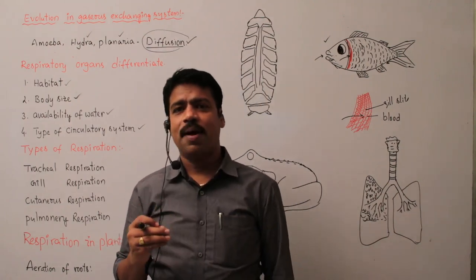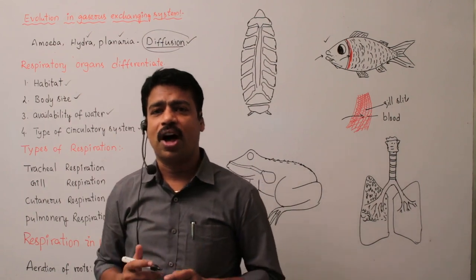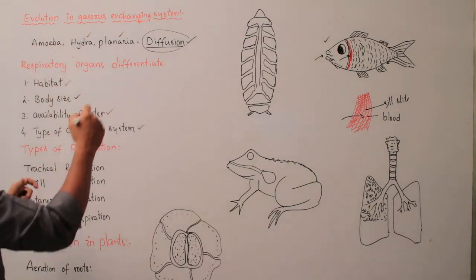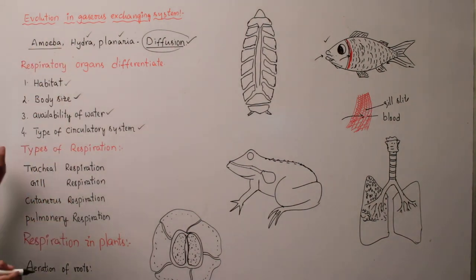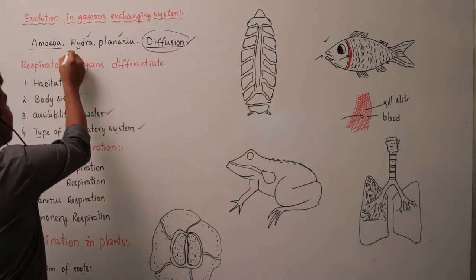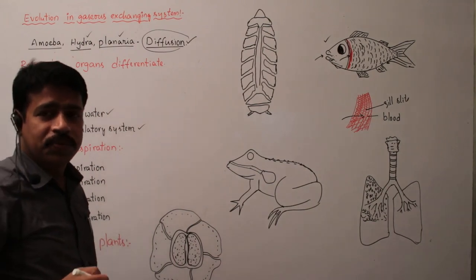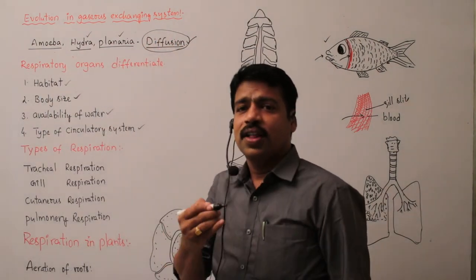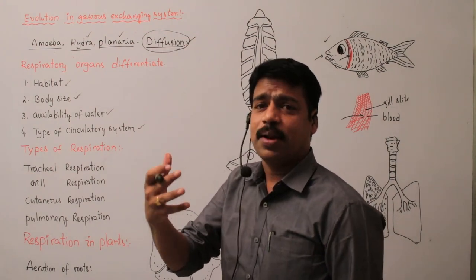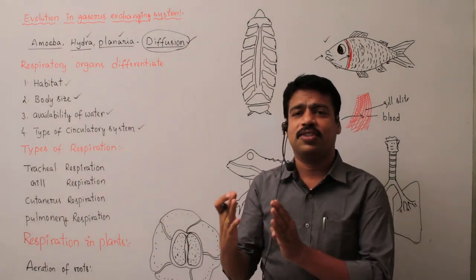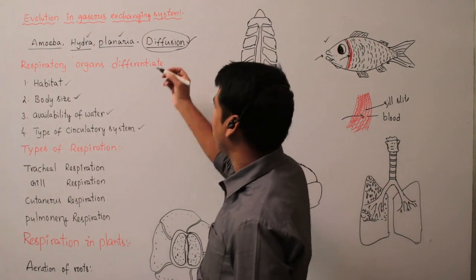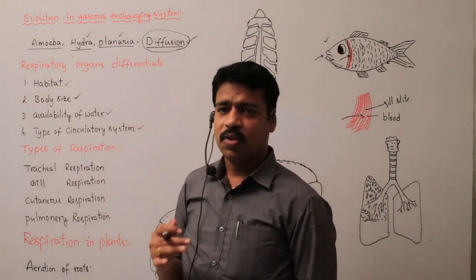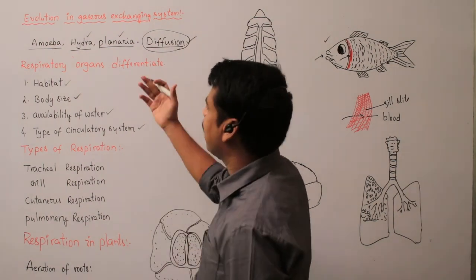Gaseous exchange is common in all living organisms, but differs from organism to organism. We will discuss gaseous exchange in unicellular organisms. For example, amoeba. Amoeba is a unicellular organism, and some multicellular organisms like hydra and planaria also show gaseous exchange by the process of diffusion. Diffusion is the movement of materials from high concentration to low concentration. By this process of diffusion, gaseous exchange takes place in unicellular organisms. It is the simplest method of gaseous exchange.